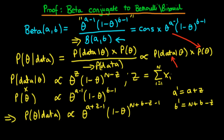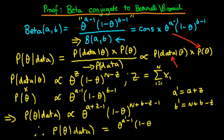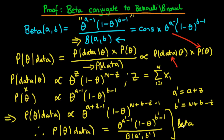We already know what that normalizing factor is going to be — it's just going to be the beta function of our new a and our new b. Hence we find that the posterior distribution, the probability of theta given the data, is equal to theta to the power a primed minus one times one minus theta to the power b primed minus one, all divided through by the beta function of a primed and b primed. In other words, we have proved that the posterior distribution is a beta distribution, and hence the beta distribution is conjugate to both the Bernoulli and the binomial likelihoods.